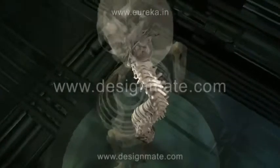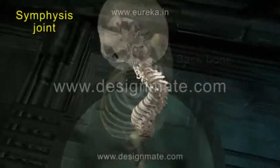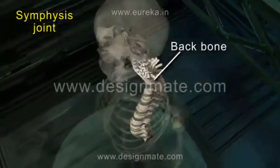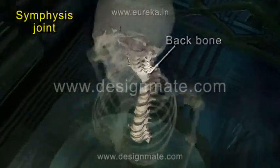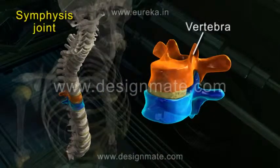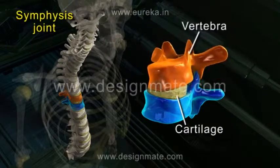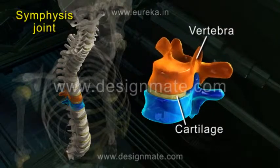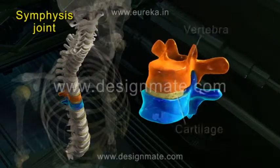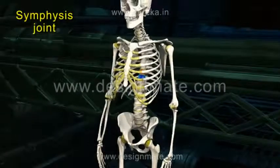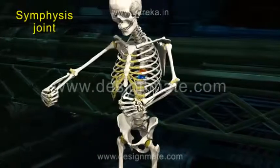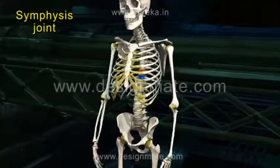The next type of joint is also seen between the vertebrae of the backbone. They are known as the symphysis, and the connection between the articulating bones is made up of tough cartilage. There is very little movement between these joints. The symphysis joint helps in the bending movement of the spine.